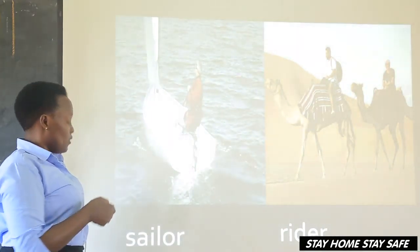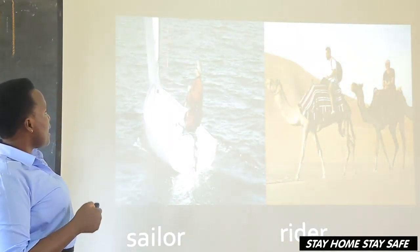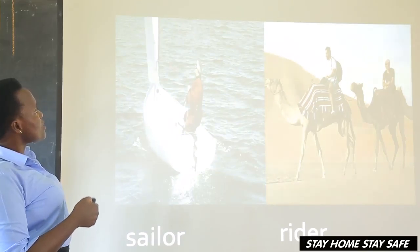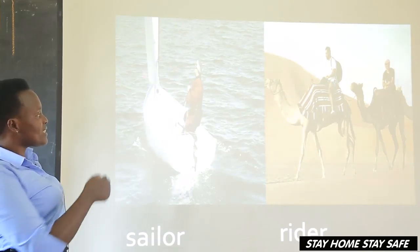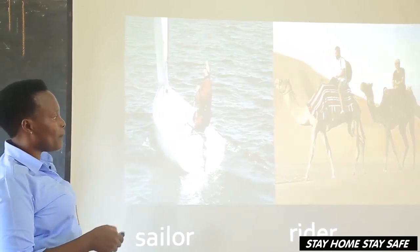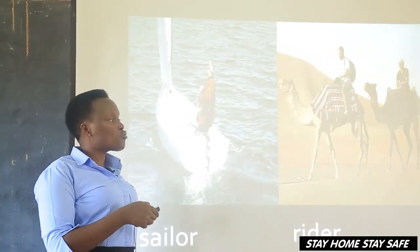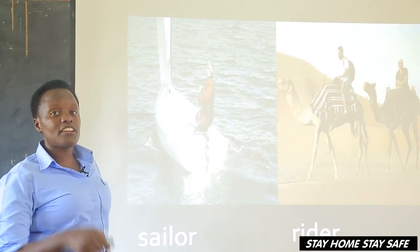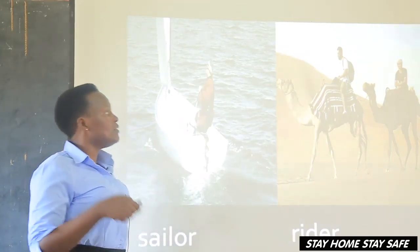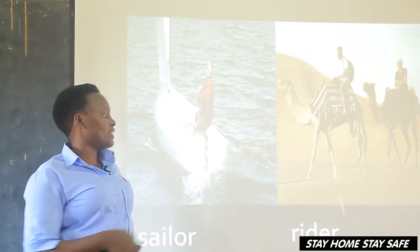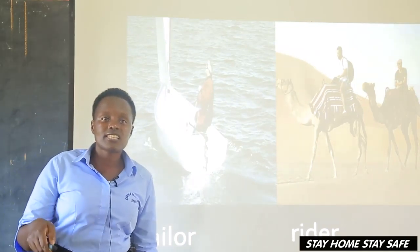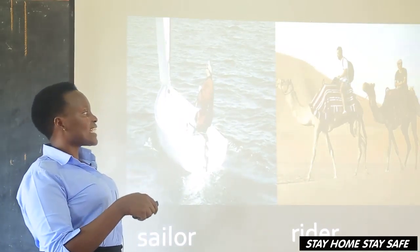Then we have a sailor — a person who uses means of transport on water. Then, a rider — a rider is the one who rides an animal, like a horse, a camel, or a donkey. The one who rides a motorcycle is a cyclist. The one who rides a motor vehicle is a motorist.